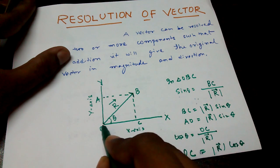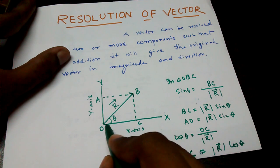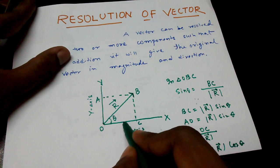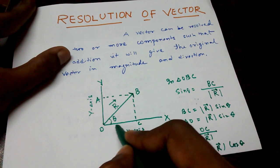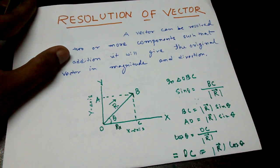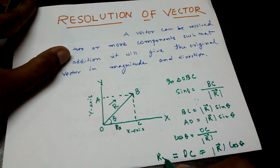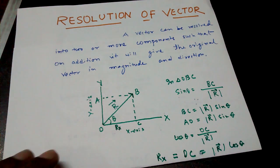OC is the X component of the vector R. And it can be written as Rx. So here I am putting value Rx against the OC.